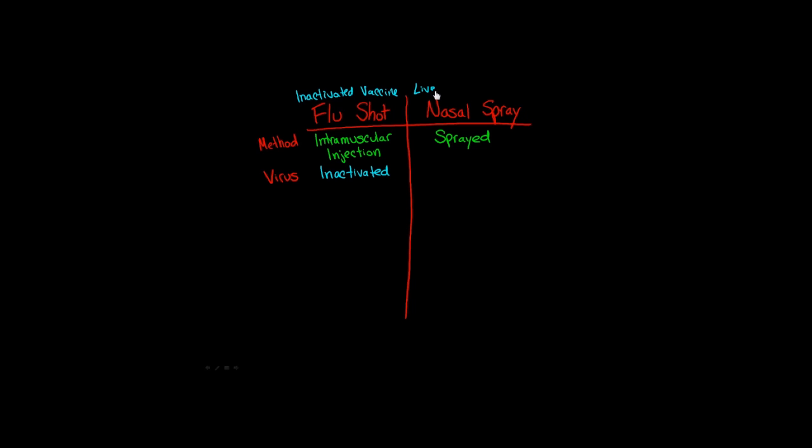The nasal spray is sometimes referred to as a live attenuated influenza vaccine. We use this word attenuated, which means altered, because the virus used in this vaccine is changed, although it's technically still alive. The changes or alterations that occur in this virus make it weaker. So in healthy people, their immune system is still able to defend against the virus and produce antibodies.